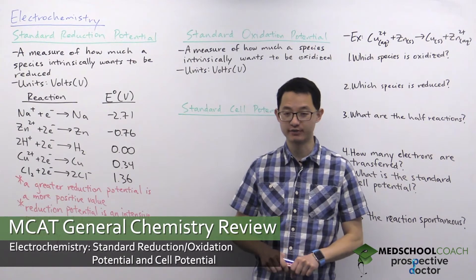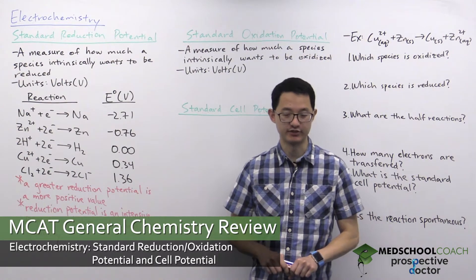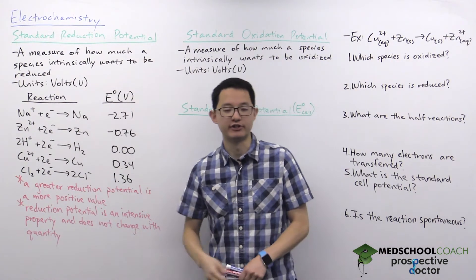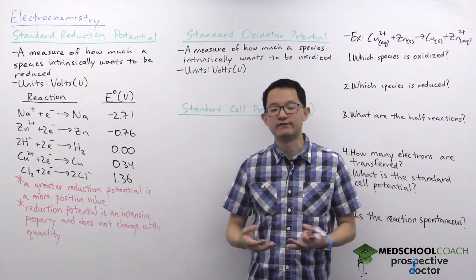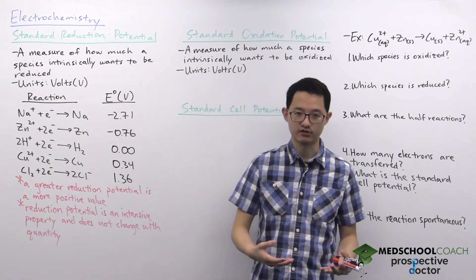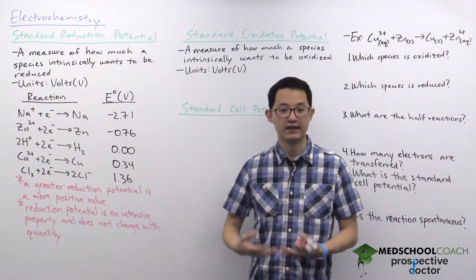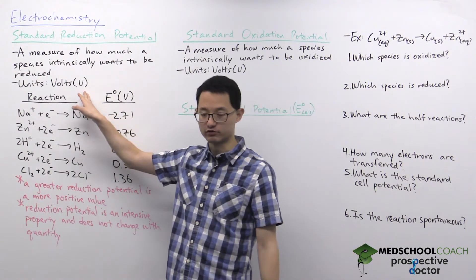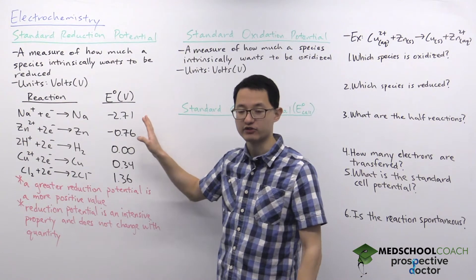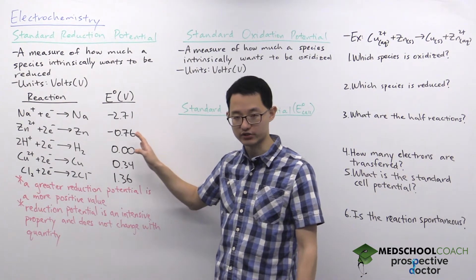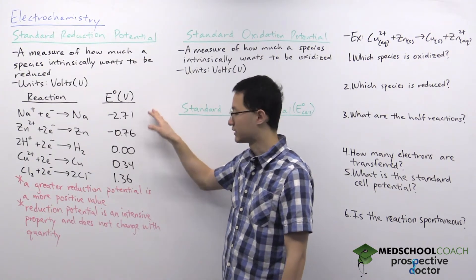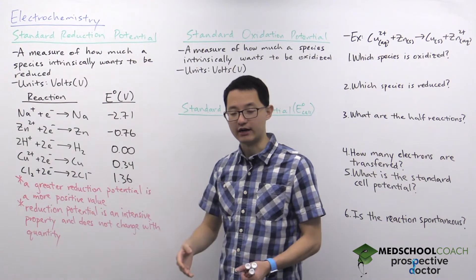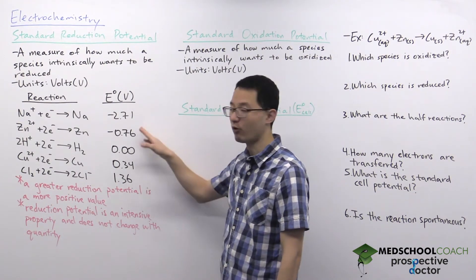In this video we're going to go over standard reduction potential, oxidation potential, and cell potential. The standard reduction potential is a measure of how much a species intrinsically wants to be reduced. Some compounds want to gain electrons — they want to be reduced — and others want to lose electrons — they want to be oxidized. The standard reduction potential is a quantitative measure of this, and has units of volts. These are not values you're expected to have memorized for the MCAT, so if you're asked to do a calculation, they would present you with a table showing different reactions and their standard reduction potentials.